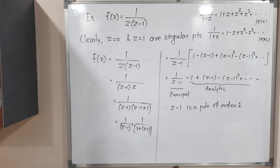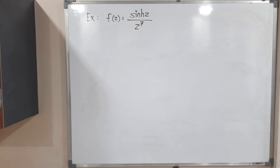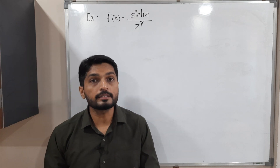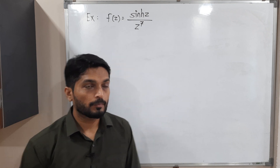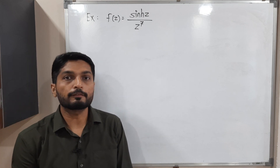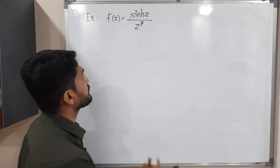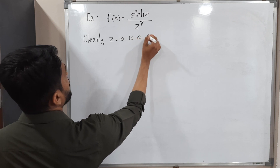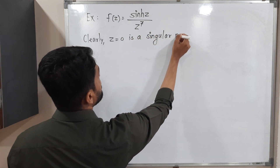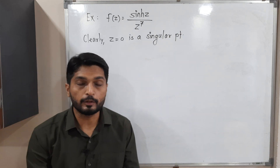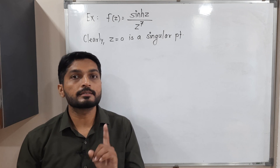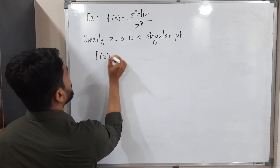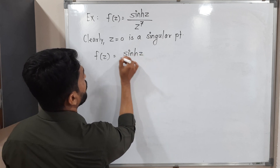Let us discuss a second example: hyperbolic sine z divided by z to the 7. We can see that z equals 0 is a singular point since the denominator is 0 there. To prove it is a pole and find its order, we need to find the Laurent expansion. Writing 1 over z to the 7 times sinh(z), and using the standard expansion of sinh(z): z plus z-cubed over 3-factorial plus z to the 5 over 5-factorial plus z to the 7 over 7-factorial plus z to the 9 over 9-factorial plus and so on.